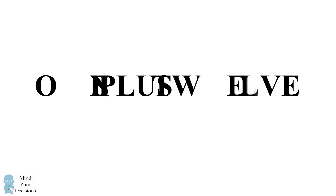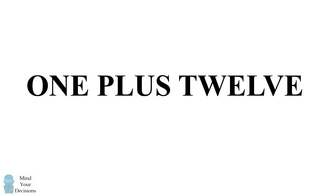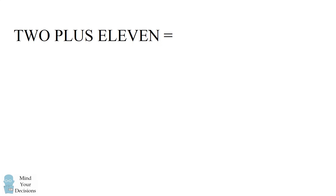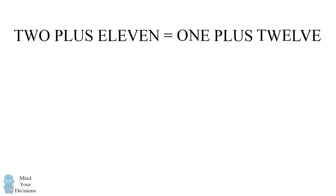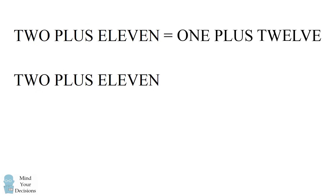The phrase 2 plus 11 exactly can be rearranged to the phrase 1 plus 12. It's quite an amazing thing that the letters of 2 plus 11 can be rearranged to equal 1 plus 12. This kind of anagram is very interesting and it will help us solve this problem.